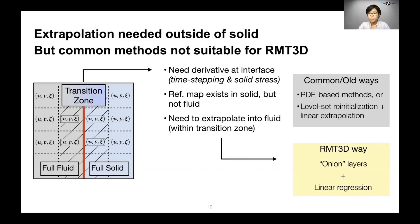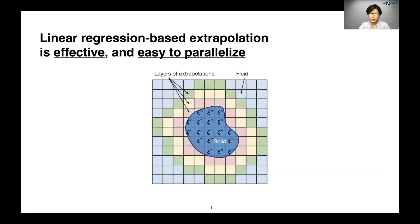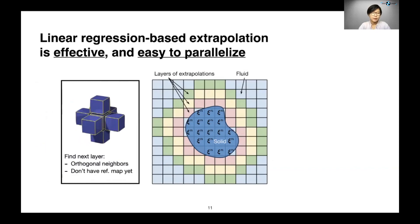To define the extrapolating order, instead of re-initialization of the level set function, we use an onion layer structure around this object and we combine that with linear regression that we know works really well. The way it works is that we take a solid that has reference map variables in the inside and we define layers outside of it. And to define the next layer, we find orthogonal neighbors on the grid that don't have reference map yet. So here, all the red cells are the first layer outside of the solid.